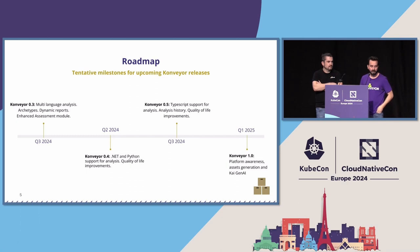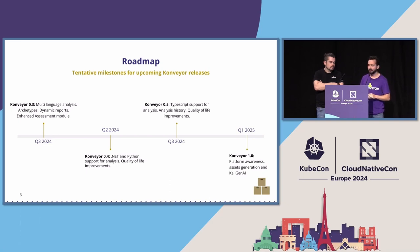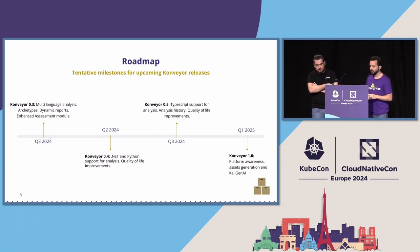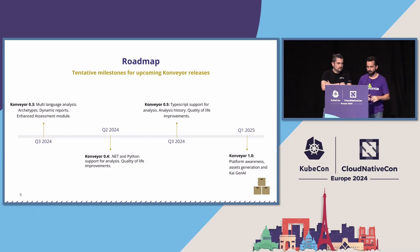For 0.4 and 0.5, which are our next releases in Q2 and Q3, we plan on adding new languages. We're expecting in Q2 to have .NET and Python support, alongside some quality of life improvements. In Q3 we will have TypeScript support. And in Q1 next year, we plan on releasing Conveyor 1.0, which will come with three big new features: platform awareness, asset generation, and integration with generative AI, which we'll speak about in a second.